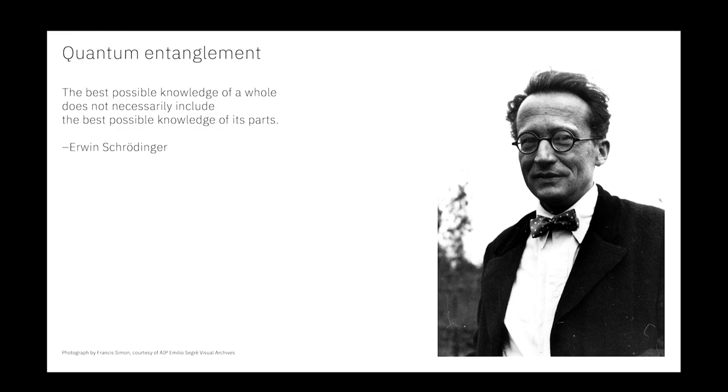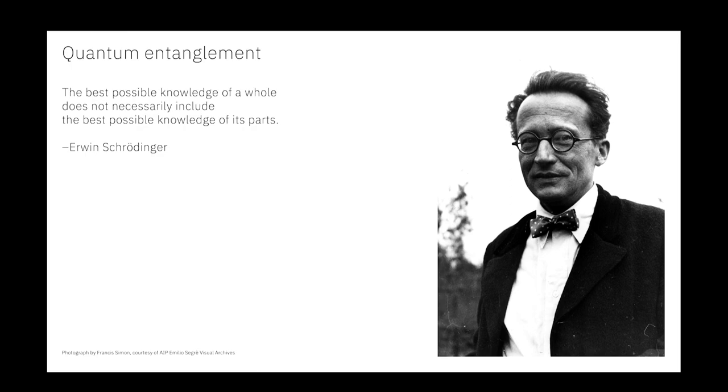Entanglement is a notoriously tricky concept. I describe it as: the best possible knowledge of the whole does not necessarily include the best possible knowledge of its parts. We're going to explore a journey through the history of entanglement in quantum physics — from its origin, to the criticism by Einstein, Podolsky, and Rosen, to the debate about its nature — and we're going to do it also by running an experiment on a quantum computer live.